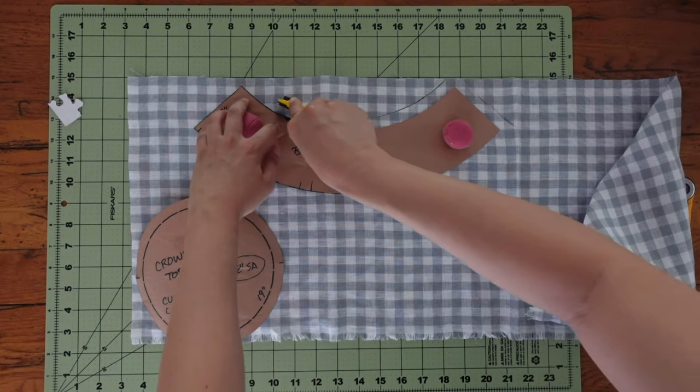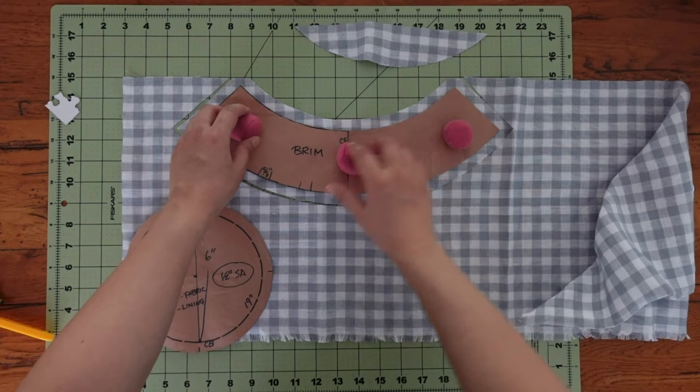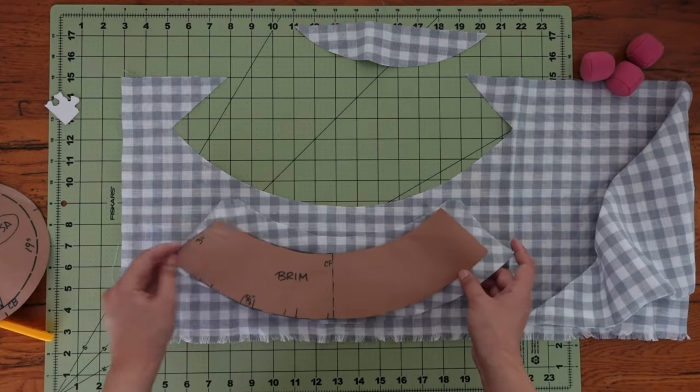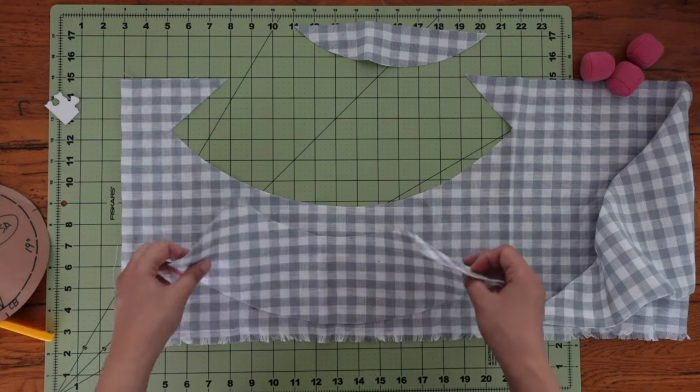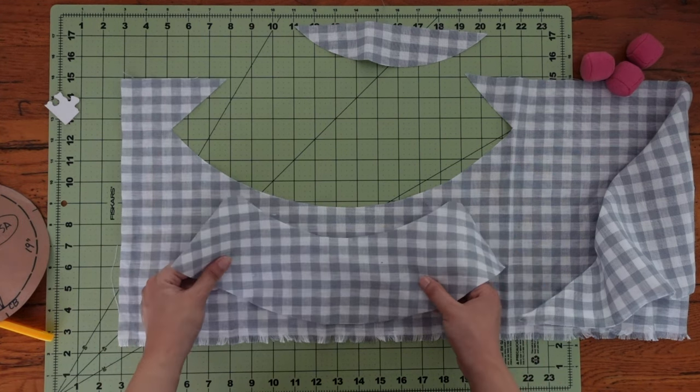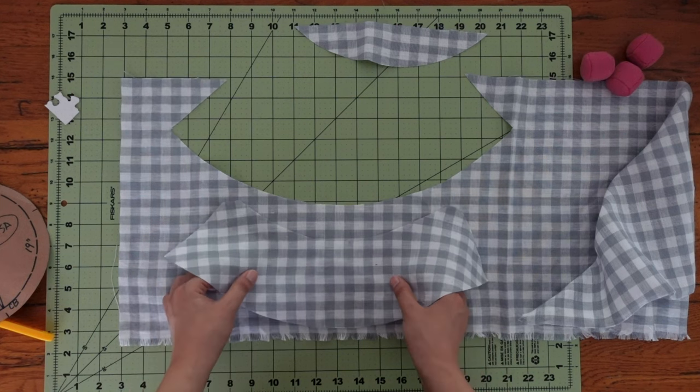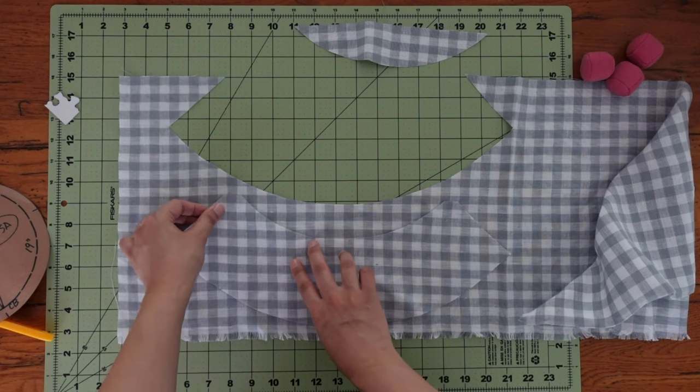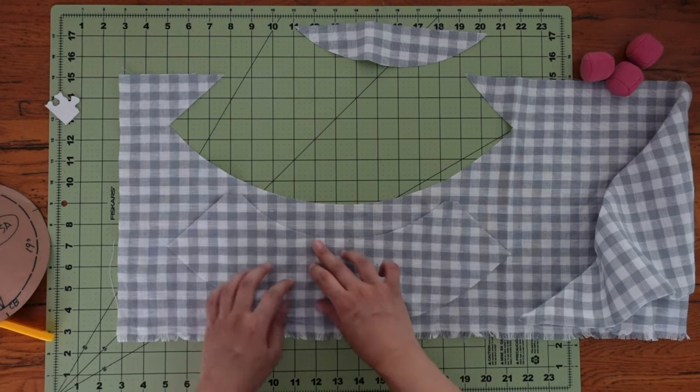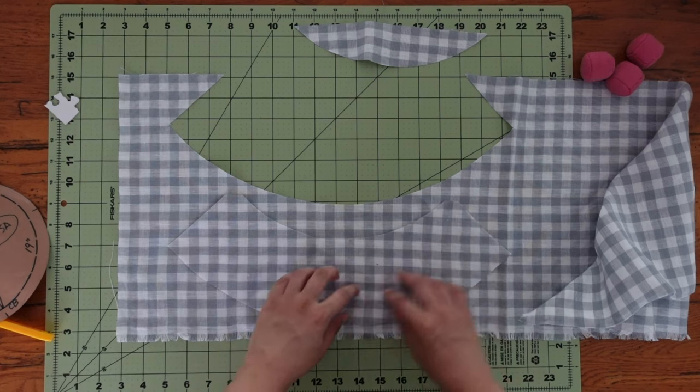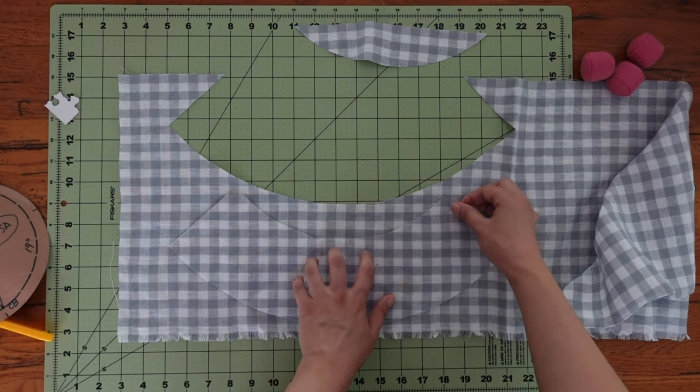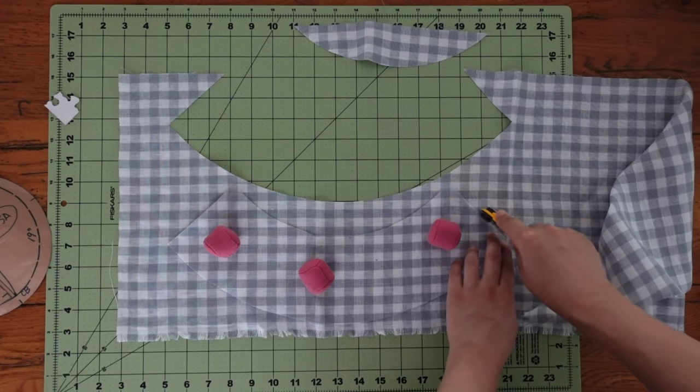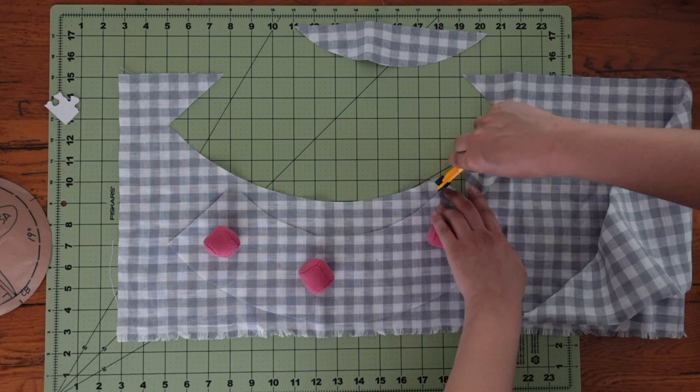One of my tricks to pattern matching gingham fabric is to cut out one piece at a time. Then use that piece as a template to cut out another piece. Place the cut piece on the fabric so the piece disappears into the background. That way you know patterns are matching exactly. Then cut out another piece using the piece you just cut out as a pattern.